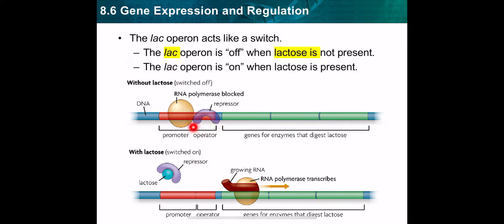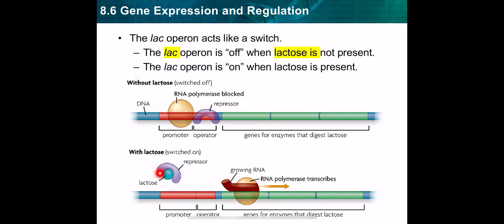Do you think the repressor should block the transcription process if there is lactose in the medium, or if there is no lactose? Of course, if there is no lactose, the repressor will bind to the operator, because there is no need for the enzymes that digest lactose if there is no lactose. If there is lactose, the lactose will bind to the repressor to remove it from the operator, letting RNA polymerase complete transcription, and the enzymes for digestion of lactose will form. This is regarding the lac operon, which is an example of an operon.